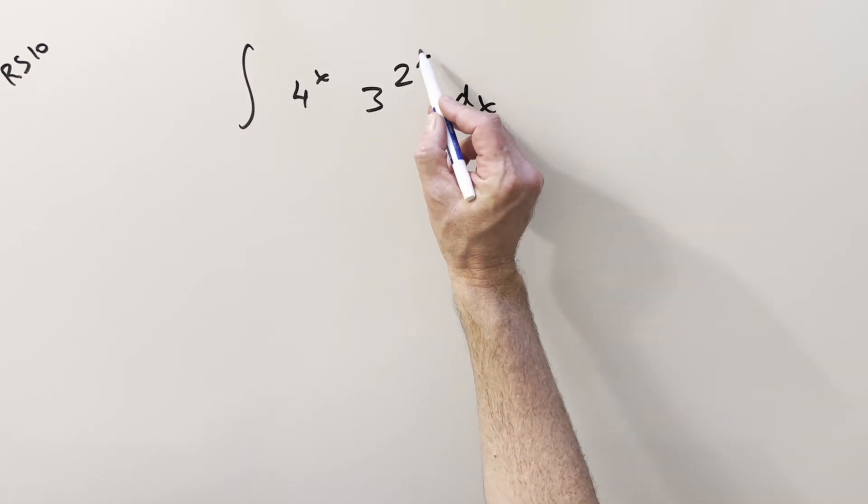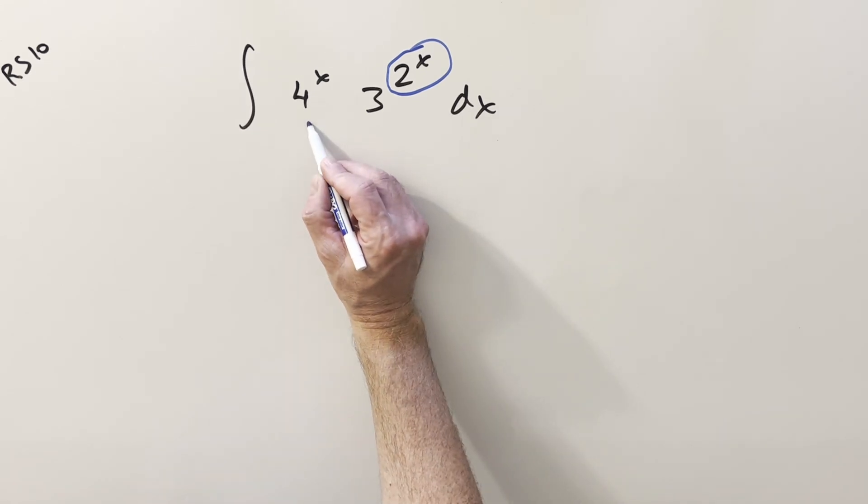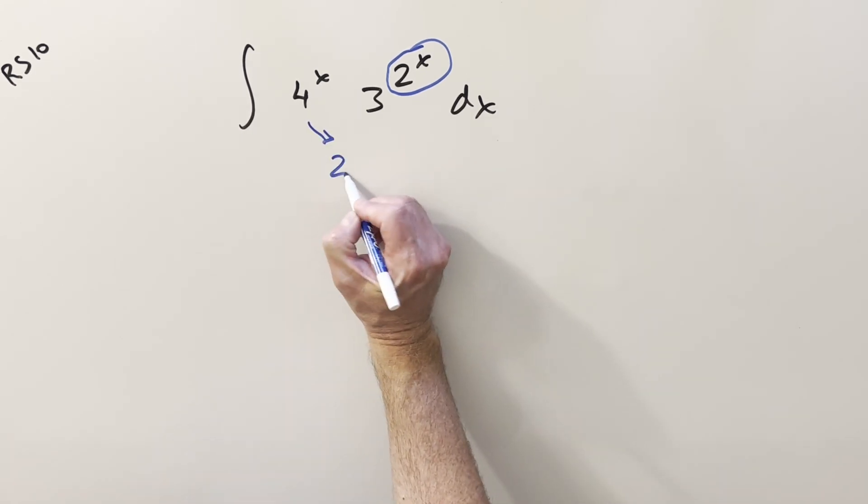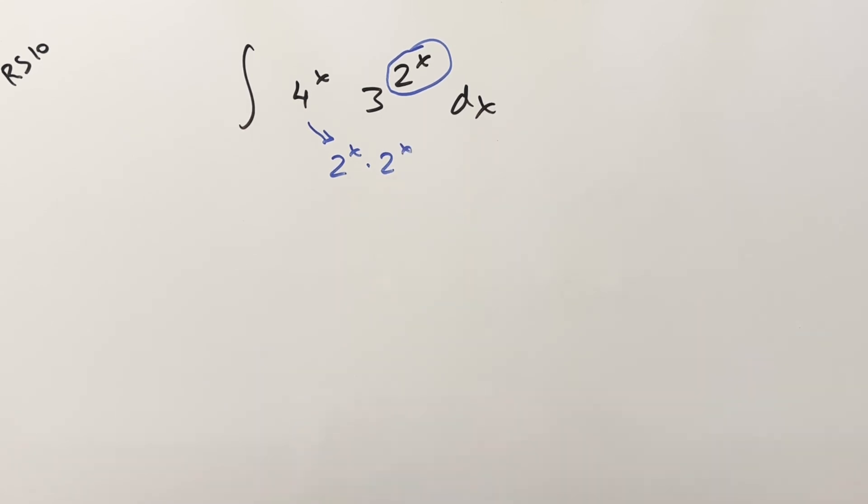It's a little tricky having this in the exponent, and what I usually want to do in this case is I don't really like having constants in the base, I want it to be e. But I think before we do that, what I want to notice is for this 4 to the x, I can write this as 2x times 2x, and I'm doing that because then writing it like this, now we've got 2 to the x in three places.